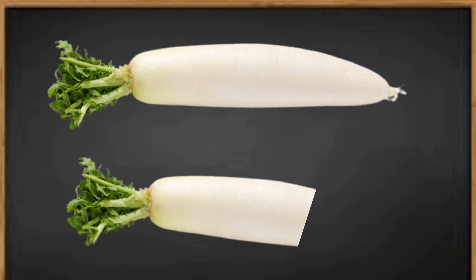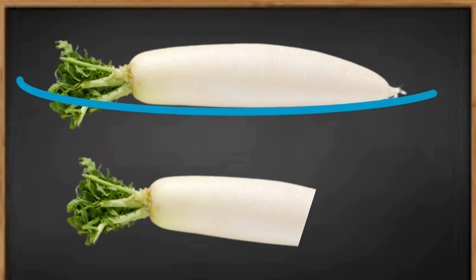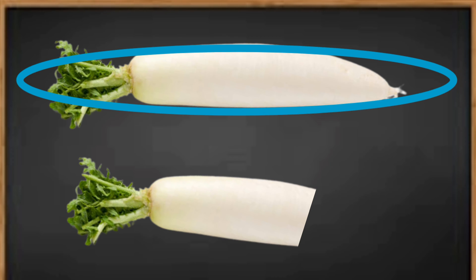In this picture, the first radish is long and the second is short, so we will circle the first radish which is long.